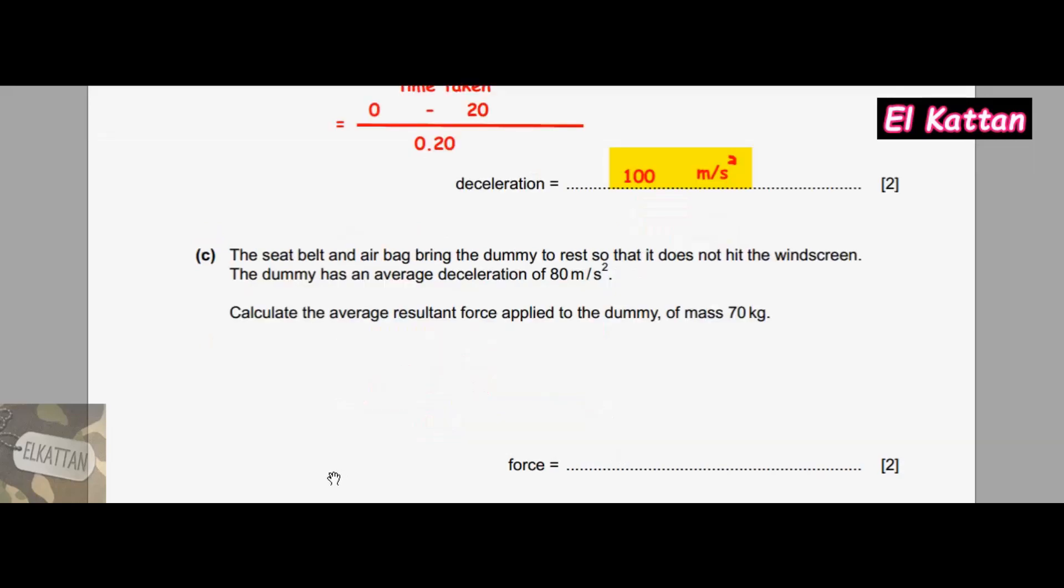For part C, the seat belt and airbag bring the dummy to rest so that it doesn't hit the windscreen. The dummy has an average deceleration of 80 m/s². Calculate the average resultant force applied to the dummy of mass 70 kg. We highlight: seat belt, airbag, dummy to rest, which means final velocity is 0, deceleration is 80 m/s², and average resultant force.